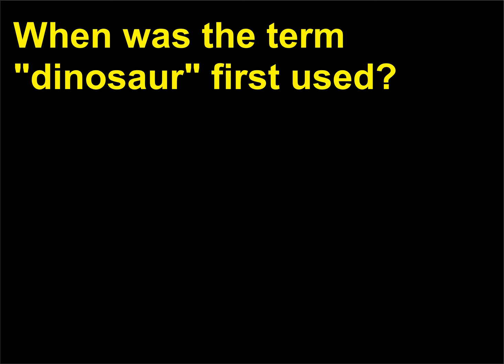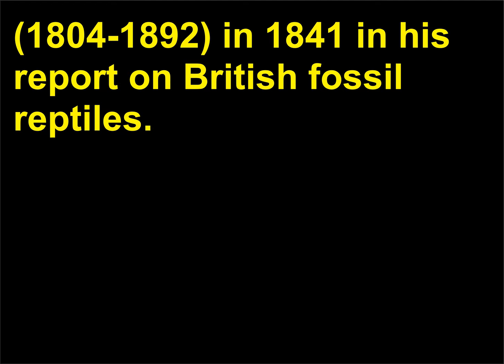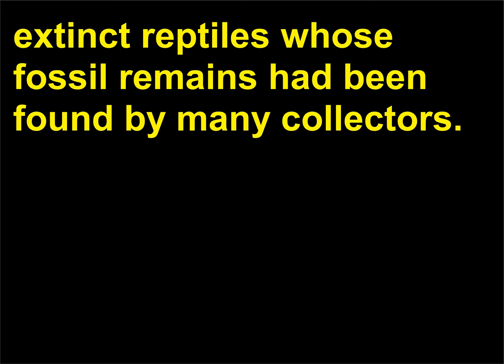When was the term dinosaur first used? The term dinosaur was first used by Richard Owen (1804–1892) in 1841 in his report on British fossil reptiles. The term, meaning 'fearful lizard,' was used to describe the group of large extinct reptiles whose fossil remains had been found by many collectors.